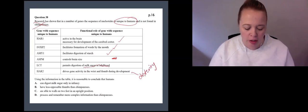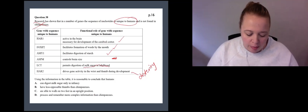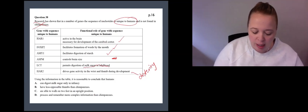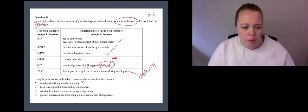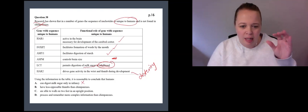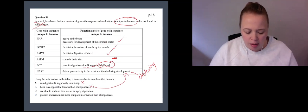So I've gone through these features. Let's just check out here. So using the information in the table, is it reasonable to conclude that humans can digest milk sugar only in infancy? This just said that we can digest it in adulthood. So that one's wrong. We have less opposable thumbs than chimpanzees. So that last gene, that HA2, it says that we're very dexterous. So that one's not going to be there.